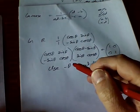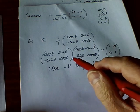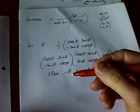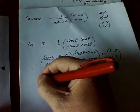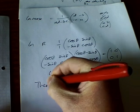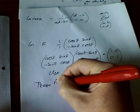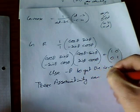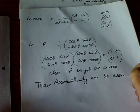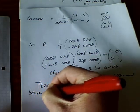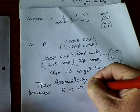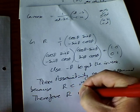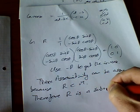There is no need to check associativity separately, because R is a subset of M and if associativity holds for the outer group it will hold for the inner group. Therefore R is a subgroup of M.